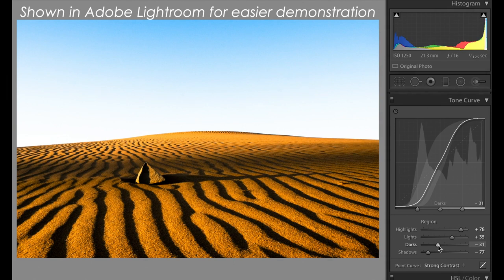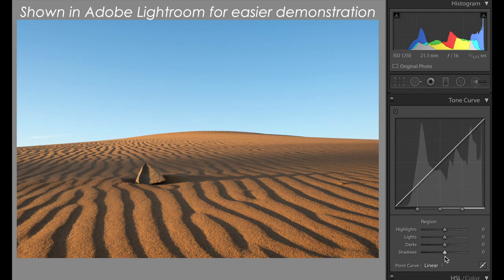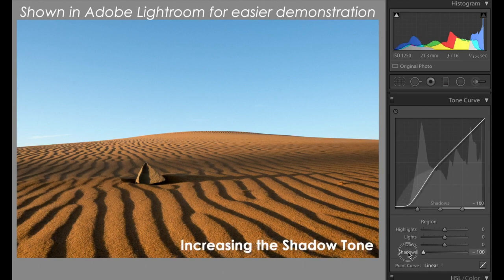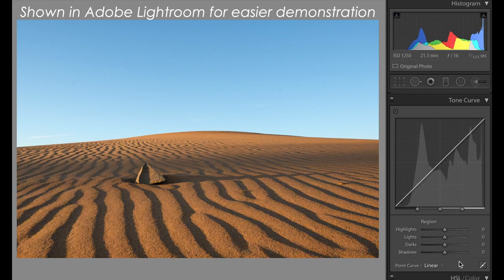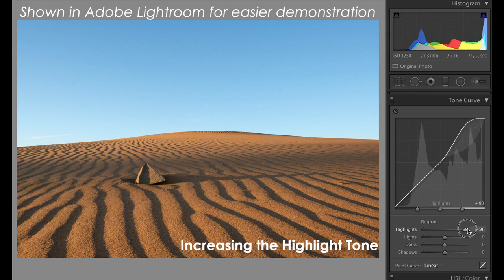Fujifilm allows us to have independent control over the right half of that curve, or the highlight tone, and the left half of that curve, or the shadow tone. So if we just want to increase contrast in the shadows — just making those dark areas darker — we increase the shadow contrast, and the highlight areas, the sky in this example, are not affected at all. Or if we want to add contrast to the highlight areas of this photo, or the sky, we increase the highlight tone, and the shadow areas are not affected at all.